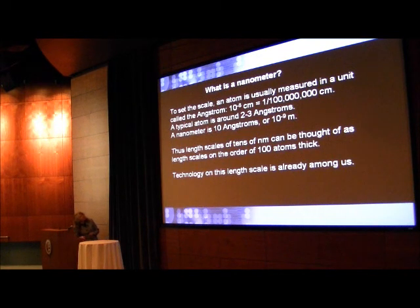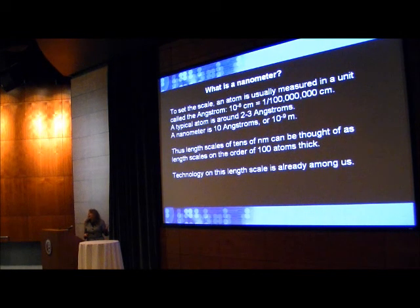Here is the scale of what an atom is, usually measured in the unit called an angstrom. That's one over a number of centimeters with eight zeros. Typical atoms are two or three angstroms, and nanometers are ten angstroms. So tens of nanometers can be thought of as length scales on the order of about 100 angstroms. You'll be seeing many pictures here in which the length scales are some tens of nanometers. In fact, that's only 80 angstroms wide, or 80 atoms wide.